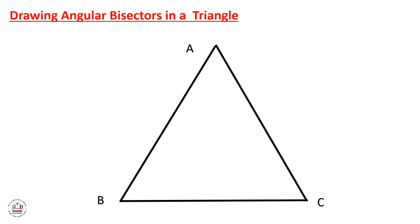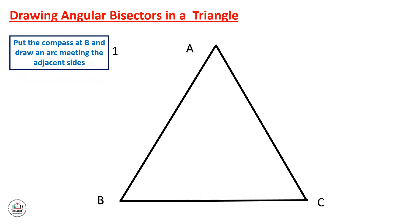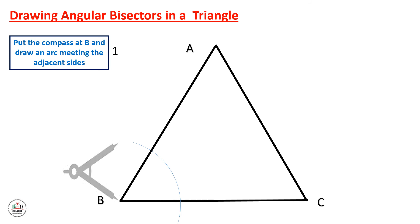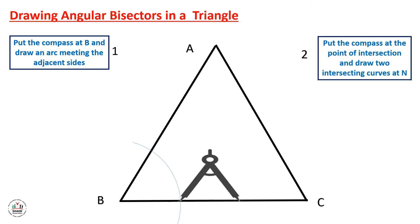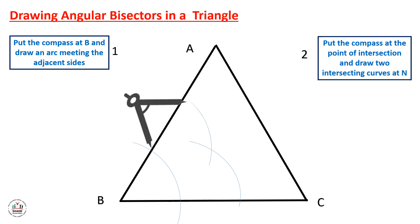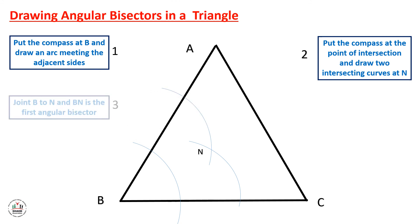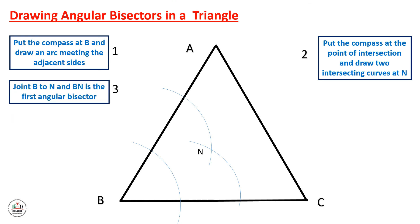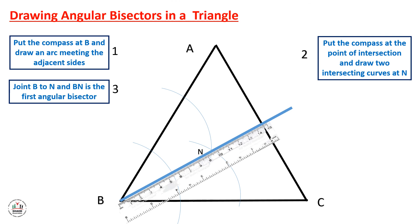Now let's draw the three angular bisectors in a triangle using the same steps for each angle. To draw the angular bisector for angle B, place the compass at B and draw an arc meeting the adjacent sides. Then place the compass at each intersection point and draw two intersecting arcs at N. Finally, join point B with N using a ruler to get the first angular bisector BN.